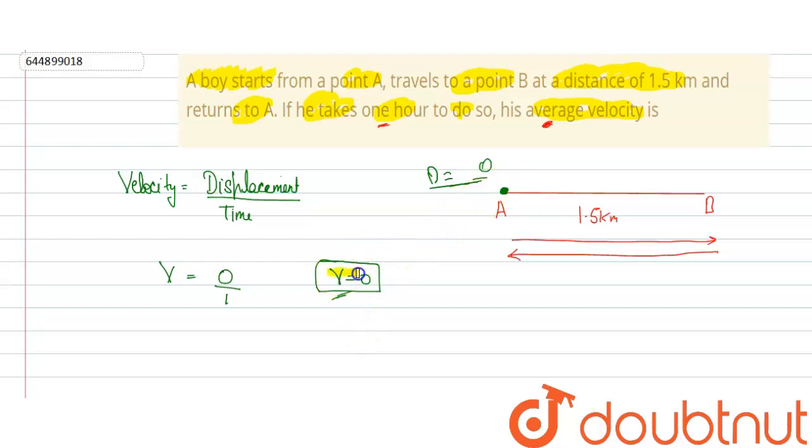Why? Since the boy returns to the original point of start, his displacement will be equal to 0. If displacement is 0, which means velocity is also 0. So velocity is 0.